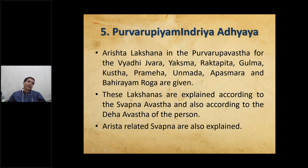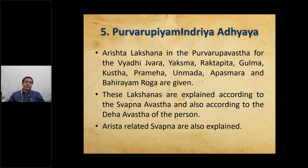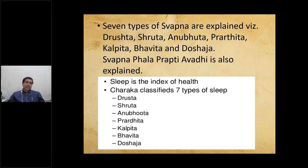The fifth chapter is Purvarupiam Indriya Adhyaya. Arishta Lakshana with Purvarupa — premonitory signs — especially of Jwara (fever), Yakshma (tuberculosis), Raktapitta (epistaxis), Gulma, Kushtha (skin diseases), Prameha (diabetes), Unmada, Apasmara (psychological problems), and other diseases are explained. According to Svapna Avastha (sleep) and Deha Avastha of the person, symptoms are explained, including which dreams the patient sees and whether those indicate good prognosis or Arishta.